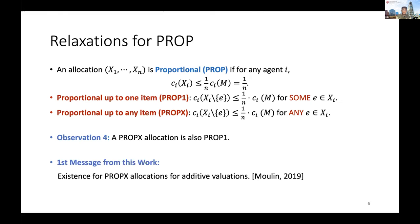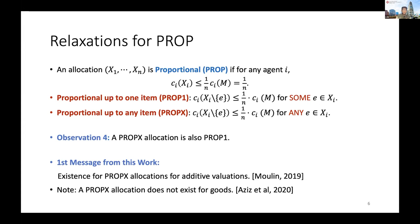The first main message from this work is that we prove the existence of PropX allocations for additive valuations. This result also appears in a survey paper by Moulin. We remark that for the allocation of goods — a parallel line of research — a PropX allocation may not exist. This shows a significant difference between the allocation of goods and the allocation of chores.